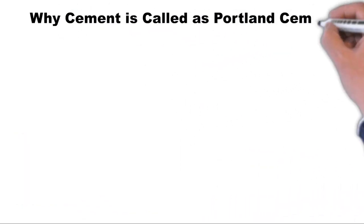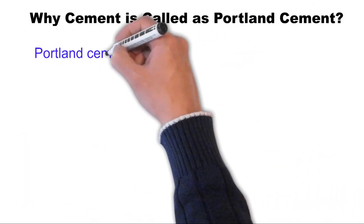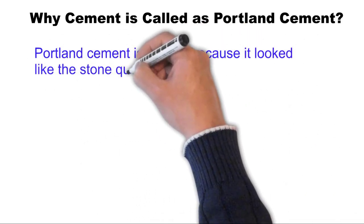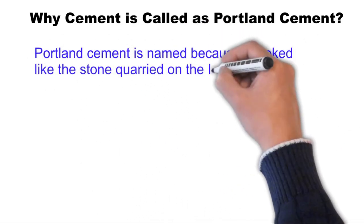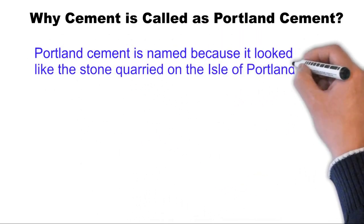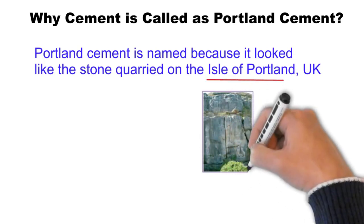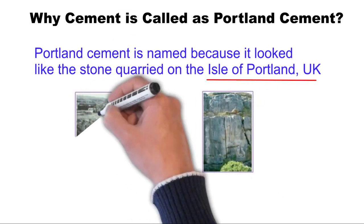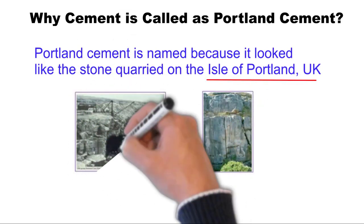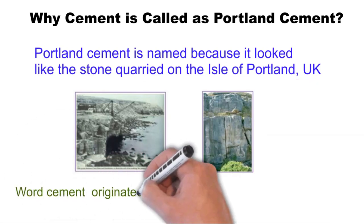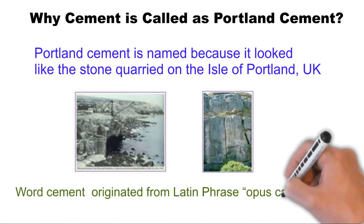Let's understand why it is called Portland cement. When scientist Joseph Aspdin invented cement, the color of the cement looked similar to the stone color of the island of Portland in the United Kingdom. So he named the cement Portland cement. The word cement originated from the Latin phrase 'opus caementicium'.